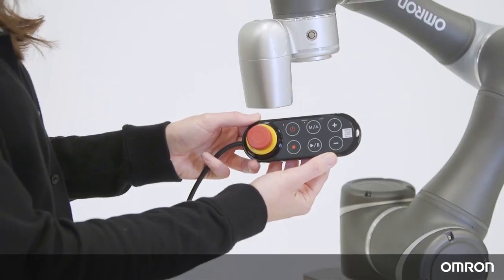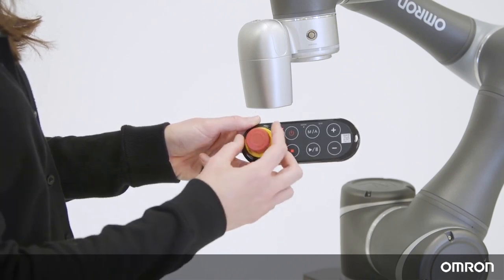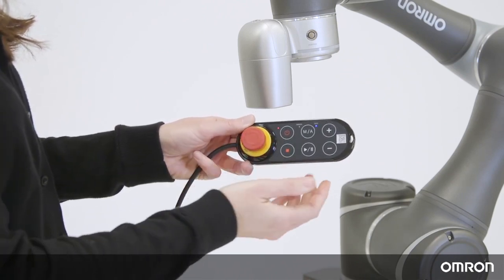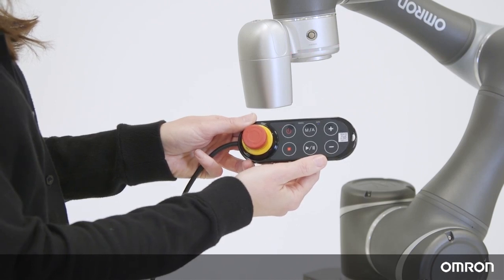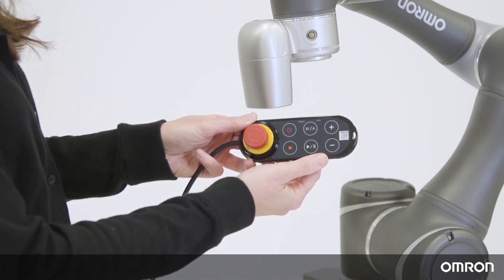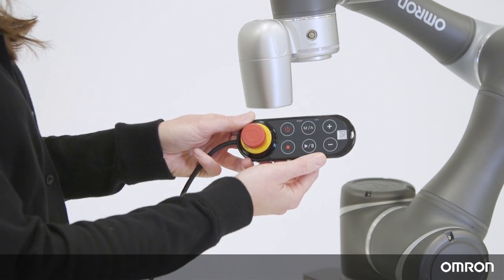To recover from E stop, turn the E stop button clockwise to release it. The Cobot light ring will start blinking in red. In about 10 seconds, the light will start blinking in blue when the Cobot enters into safe start mode.